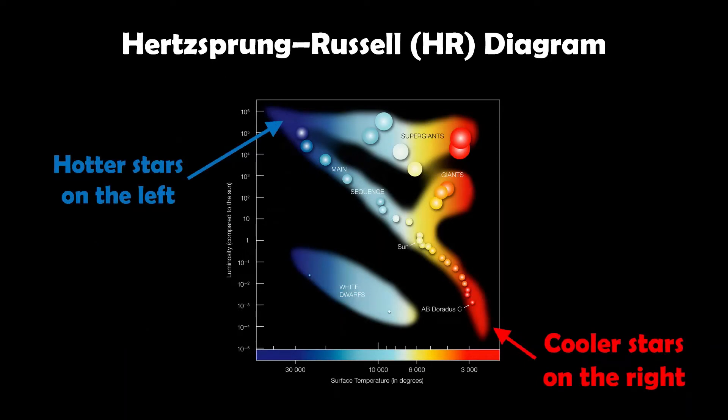Hotter stars are on the upper left, and cooler stars are on the lower right. The reason for that is they're less luminous. The hotter a star, the more energy it's giving out, so the brighter it appears. Generally, at least with the main sequence, hotter stars on the upper left, cooler stars on the lower right.